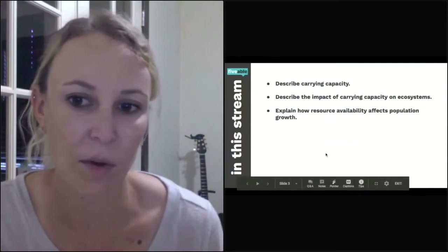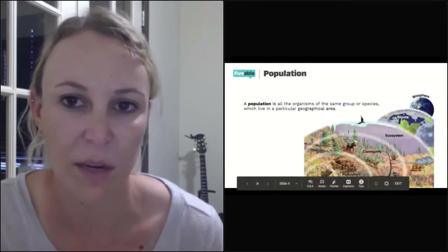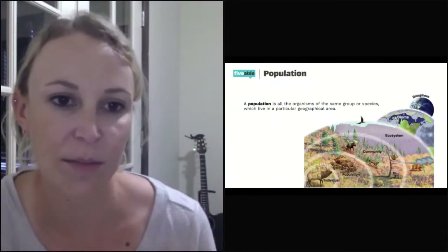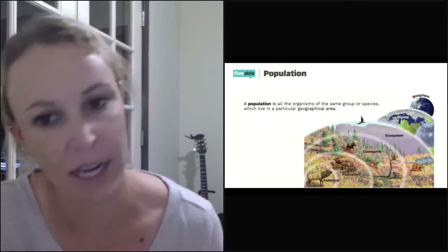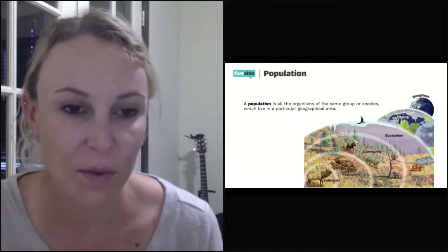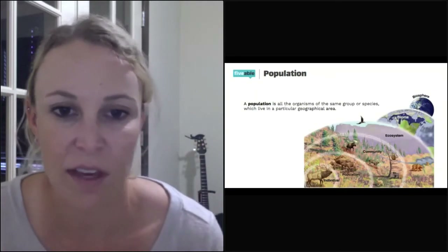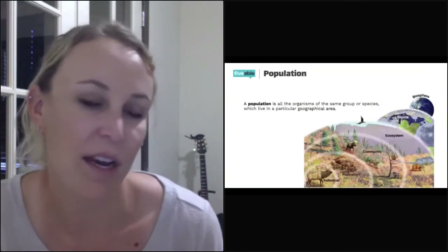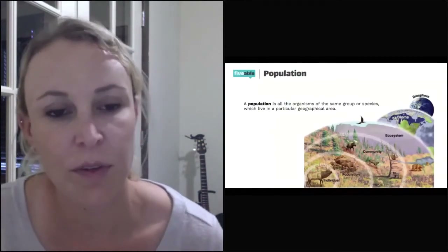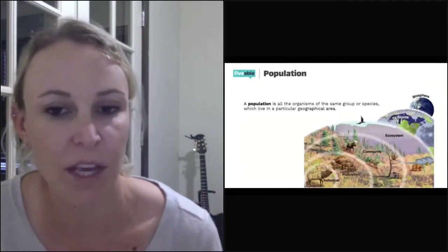To begin to talk about what carrying capacity is, we have to look at what a population is. A population is all of the organisms of the same group or species which live in a particular geographical area. This diagram shows the hierarchy or progression throughout our world — it starts with an individual, just one single animal or plant, and then a group of the same species. In this picture, there's a bunch of elk, and a group of elk living in the same geographical area would be a population of elk.